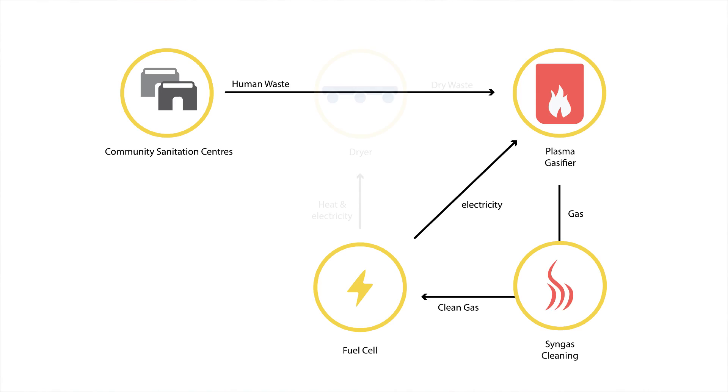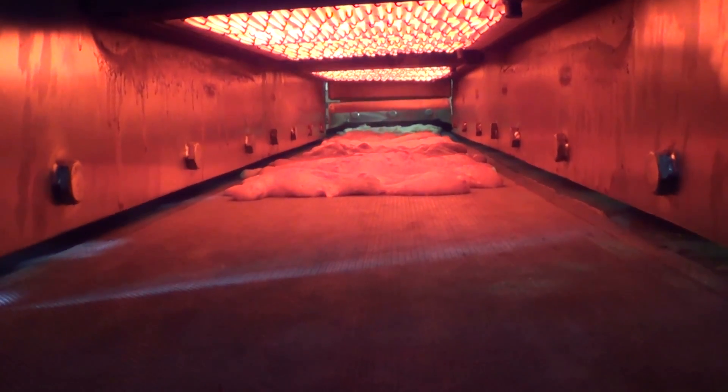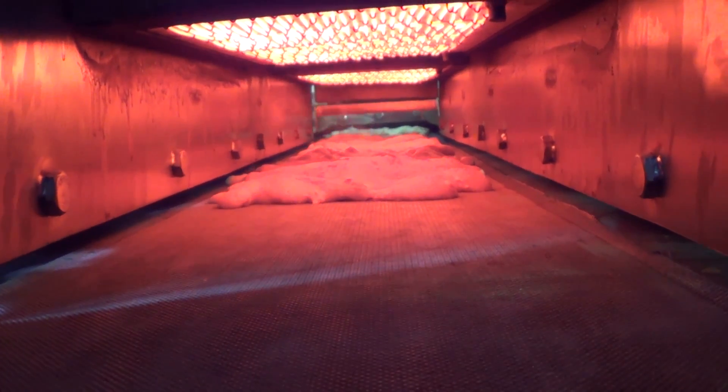We have a section where we use the heat of the fuel cell that is still available in our system to dry this human fecal matter. And with some of the electricity generated we drive the infrared section on this dryer to make the fuel dry enough for the gasifier to be acceptable.